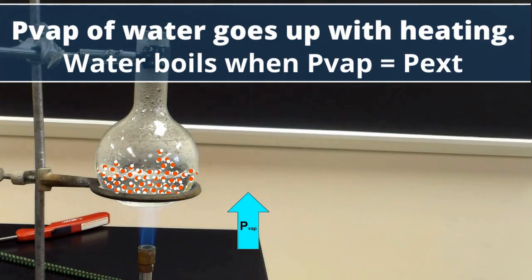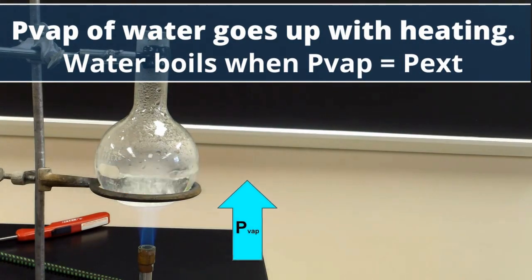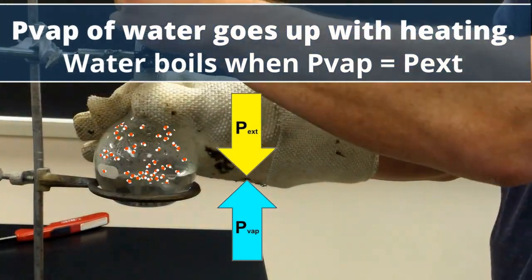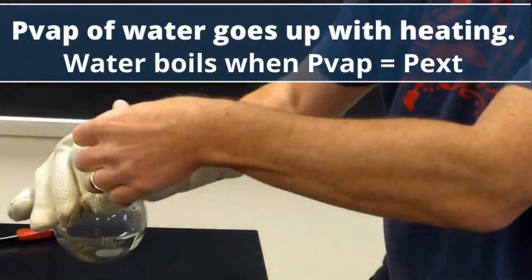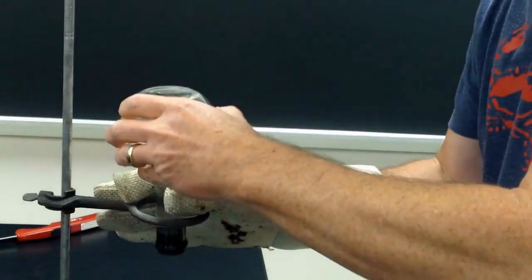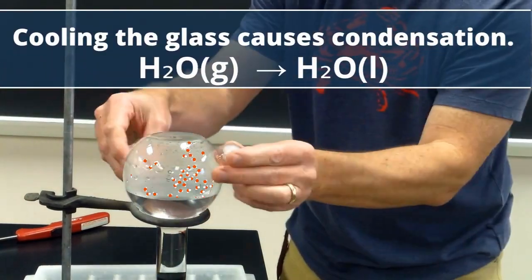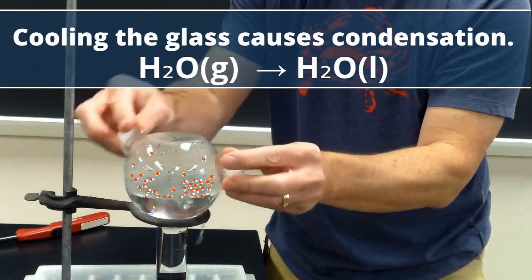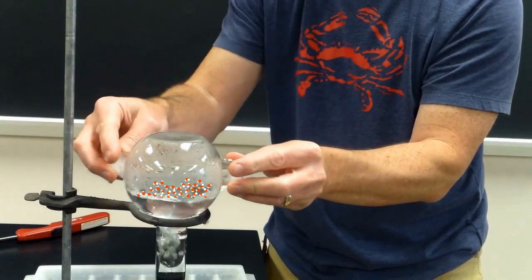Heating water increases its internal vapor pressure. Water boils when its vapor pressure matches the external pressure, which pushes down on the liquid. The ice cools the flask, making the steam inside condense.